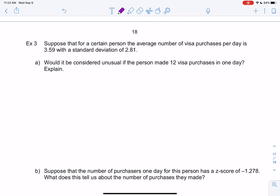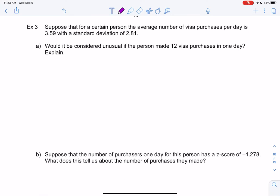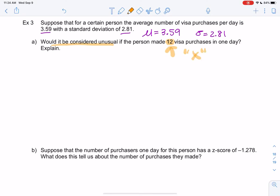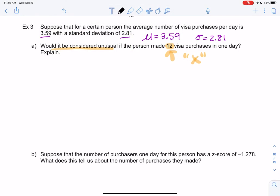Suppose some person has an average number of visa purchases per day of 3.59—I'm going to say that's μ because if we're only describing that person, they're the population. On average they're making three and a half purchases per day on their credit card and a standard deviation of 2.81. The credit card company might be like, wow, they made 12 purchases today—is that suspicious? So would it be considered unusual if they made 12 purchases? This is one way credit cards can determine fraud. They have lots of other patterns they're looking at, but they're looking at this as well. Anytime I see unusual, I like to find the z-score.